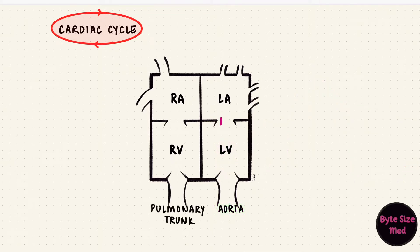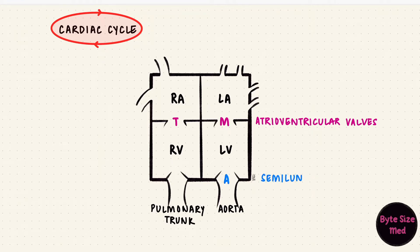Between the left atrium and the left ventricle is the mitral valve, which is an atrioventricular valve. The right side has the tricuspid valve. Between the left ventricle and the aorta is the aortic valve, which is a semilunar valve. The right side has the pulmonary valve. And this is my schematic heart that I'm going to be using to explain what happens.